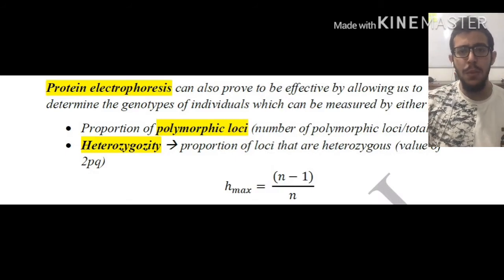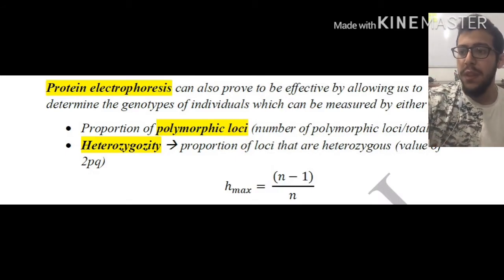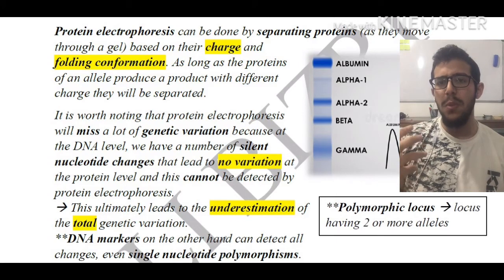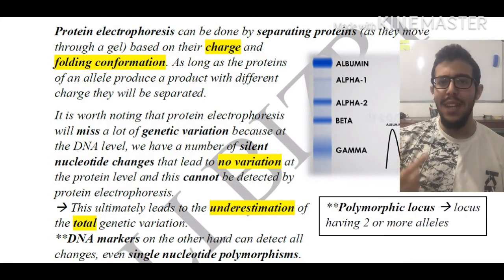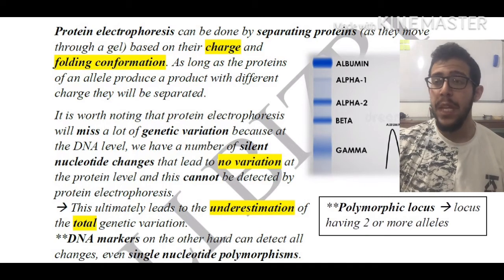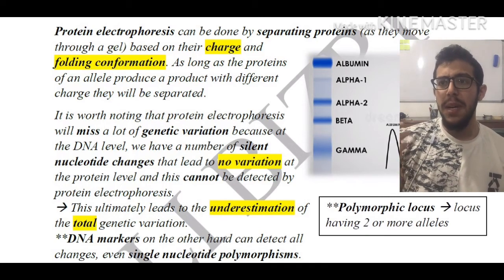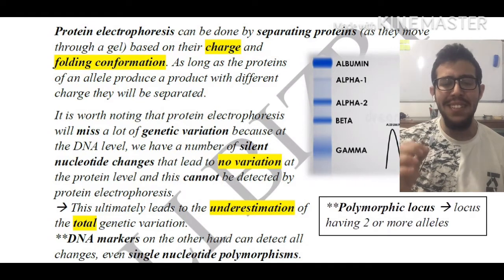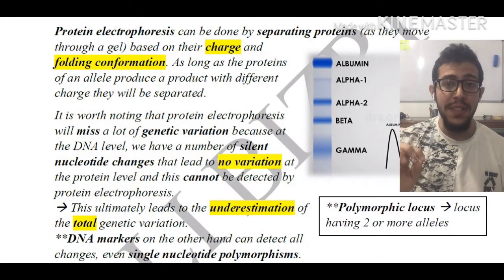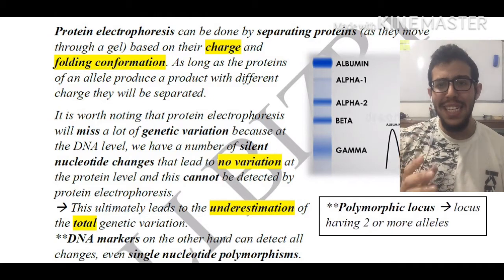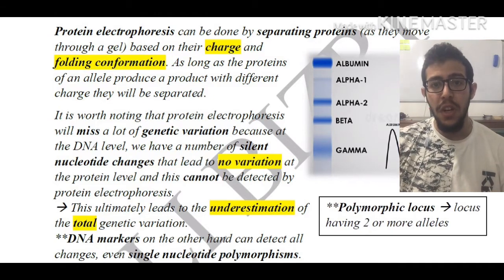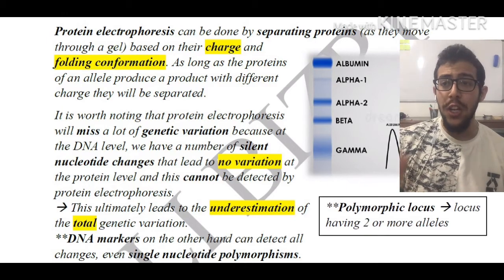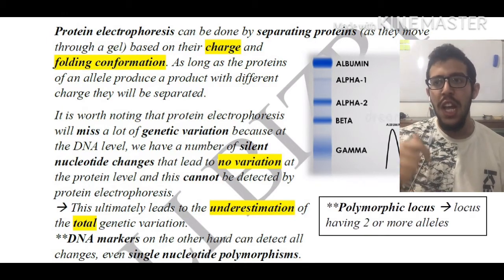To calculate it: Hmax equals N minus 1 divided by N, where N represents the number of individuals in a population. Protein electrophoresis gives us one of the more accurate indicators of the genotypes of a certain species or population. It works by separating proteins as they move through a gel, based on their charge and their folding conformation — this is called bidirectional electrophoresis. As long as the proteins from an allele produce a product with a different charge, they will be separated.